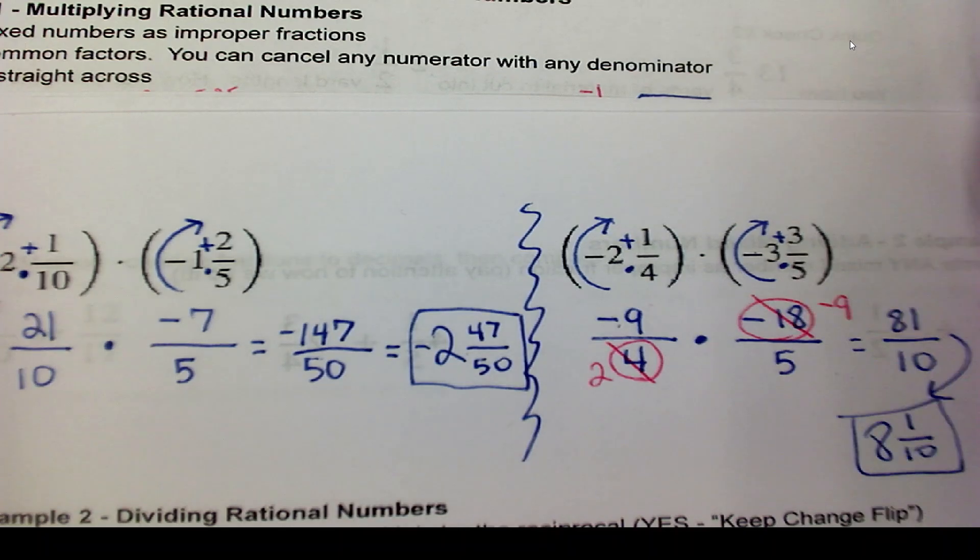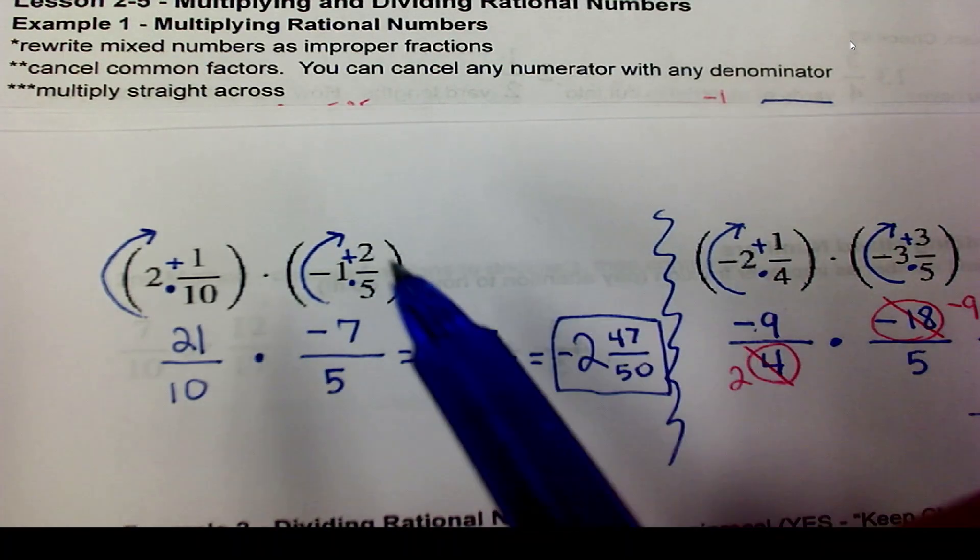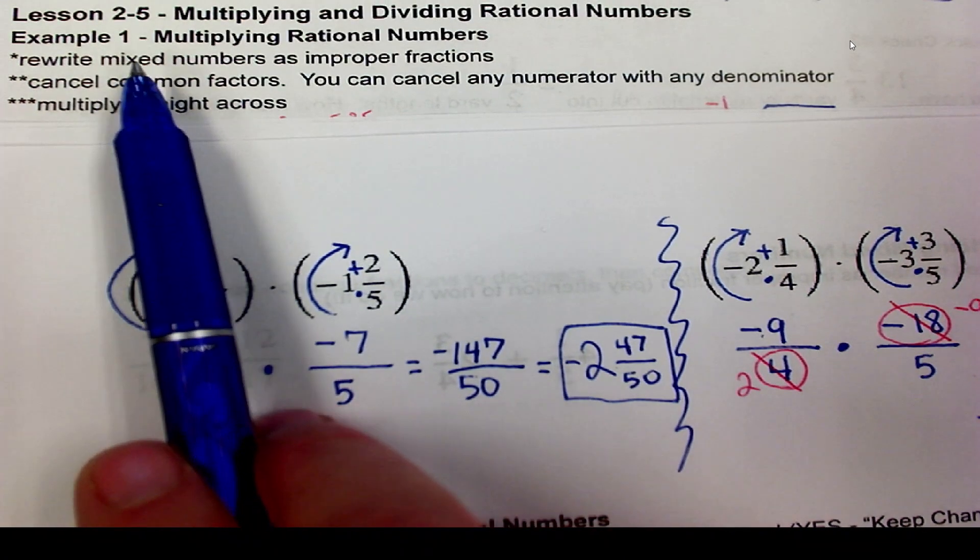There we go. That is how we multiply mixed numbers, whether they're negative, positive, etc. Just remember, here it is on the recap. Always rewrite your mixed numbers as improper fractions.